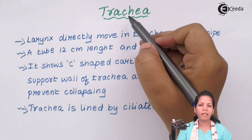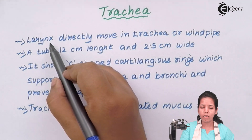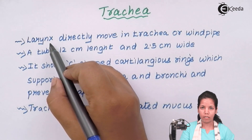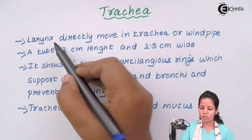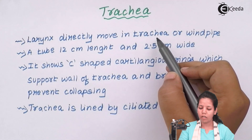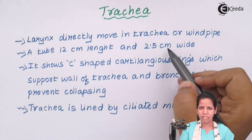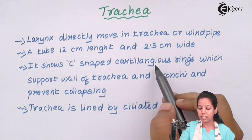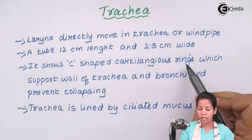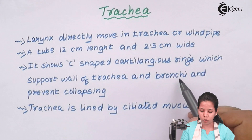Trachea, or in simple language the windpipe. Now larynx, or adam's apple or voice box — whenever air reaches from your nasal region to your pharynx and by going through larynx, finally air reaches to this windpipe termed as trachea. Your windpipe or trachea is approximately 12 cm in length and 2.5 cm wide. It shows C-shaped cartilaginous rings. These C-shaped cartilaginous rings help in supporting the walls of trachea as well as bronchi or bronchioles so as to prevent collapsing.